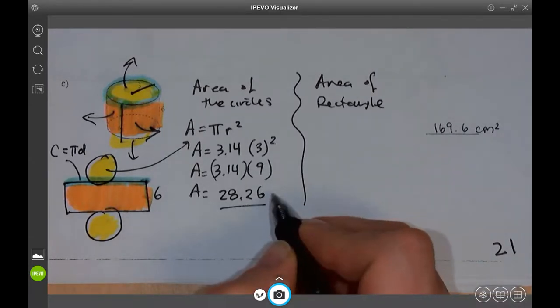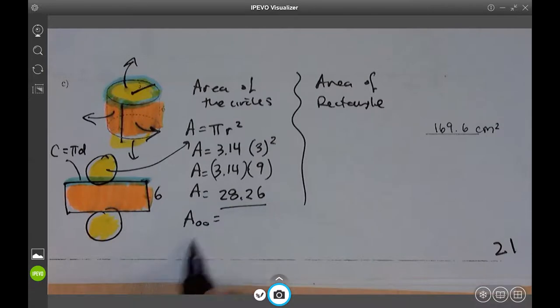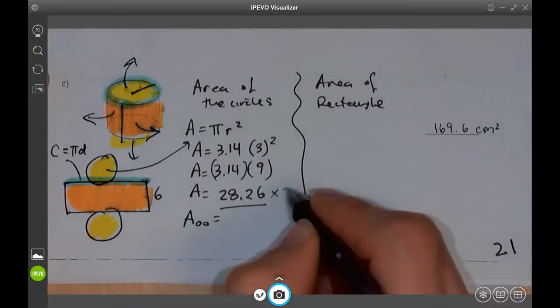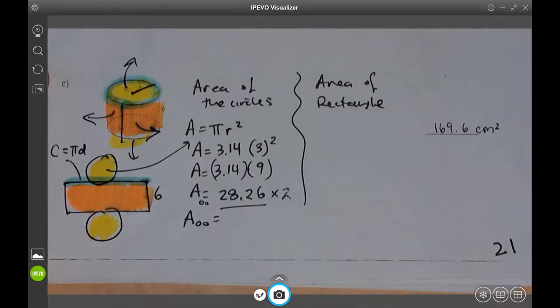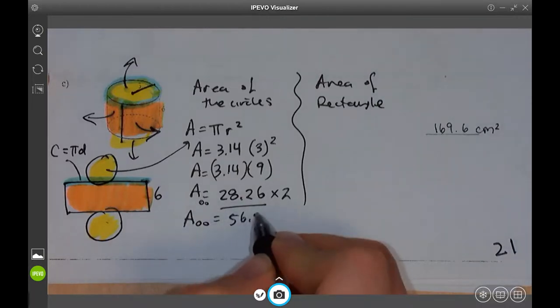Now we have, that's an area of one circle. We're going to, I usually put two little circles to notify that's two circles. I'm going to multiply this by two to get two circles, both circles. Multiply that by two. I get 56.52.